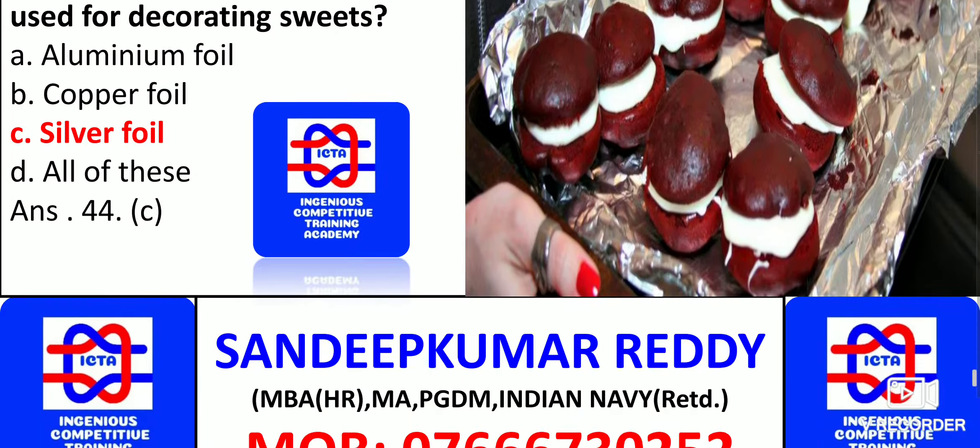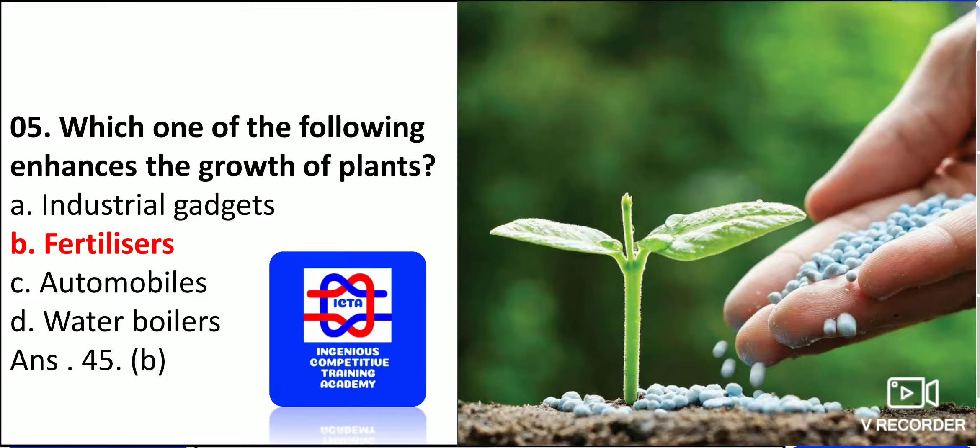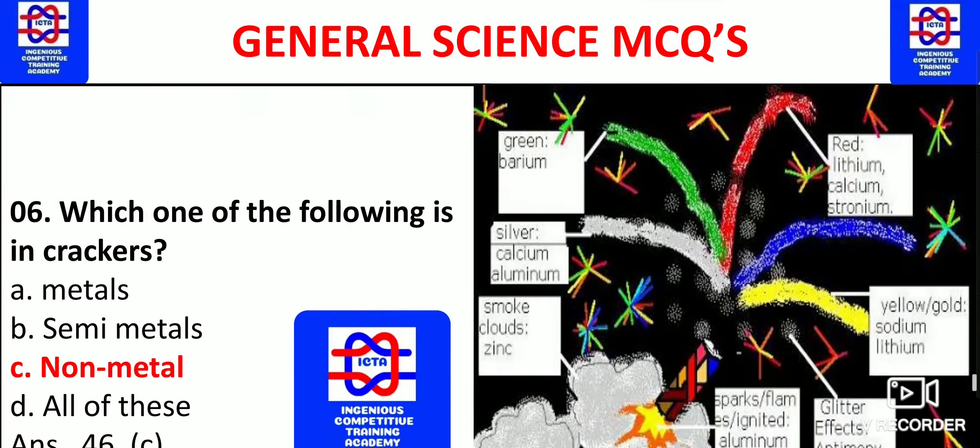Which one of the following enhances the growth of plants? We use fertilizers in order to give growth for the plants. Industrial gadgets are different, as well as automobiles are also different, and water boilers also different for enhancing the growth of plants.